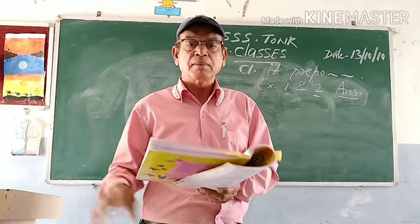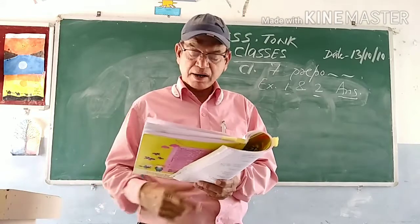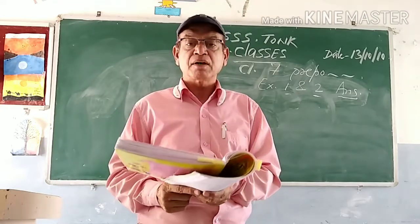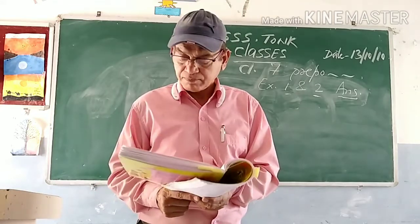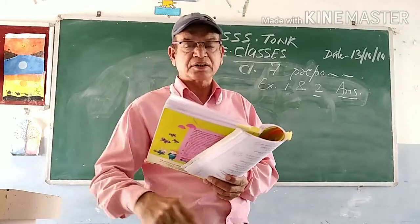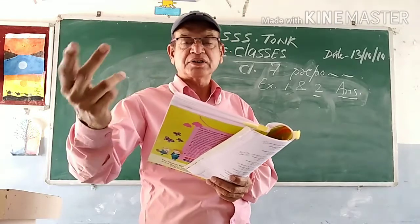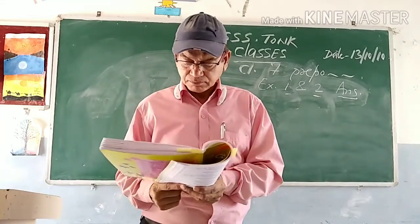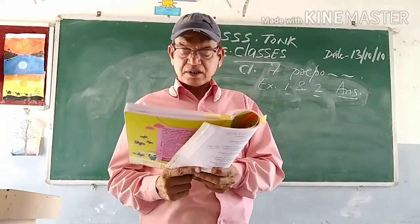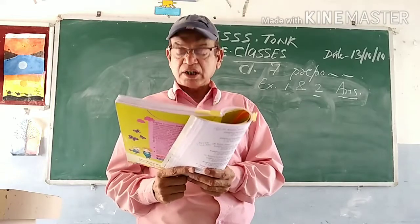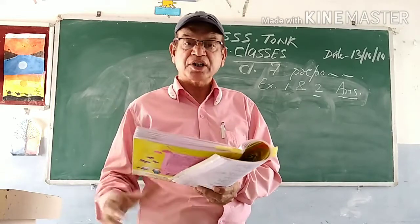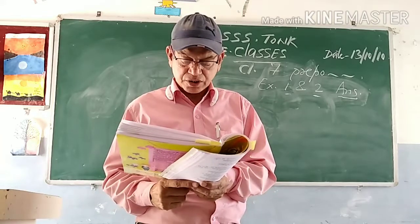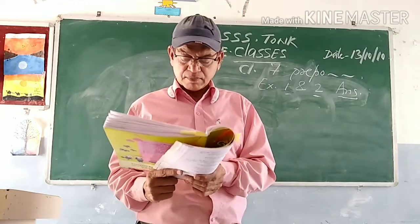Number 4: answer is 'behind' — meaning at the back, behind that tree. Number 5: answer is 'between'. 'Between' is used for two things. Number 6: answer is 'among'. 'Among' is used for more than two things.